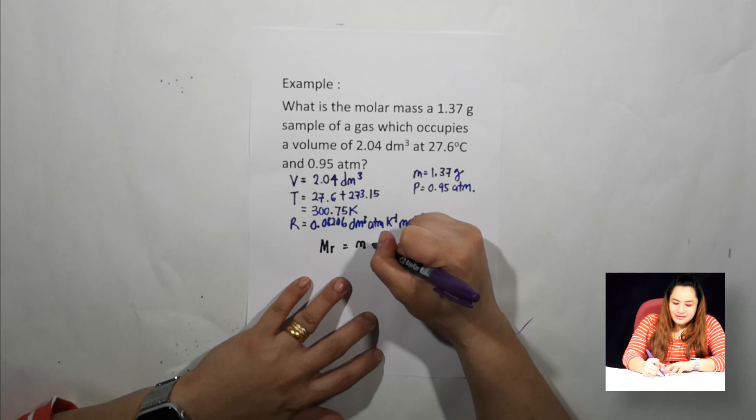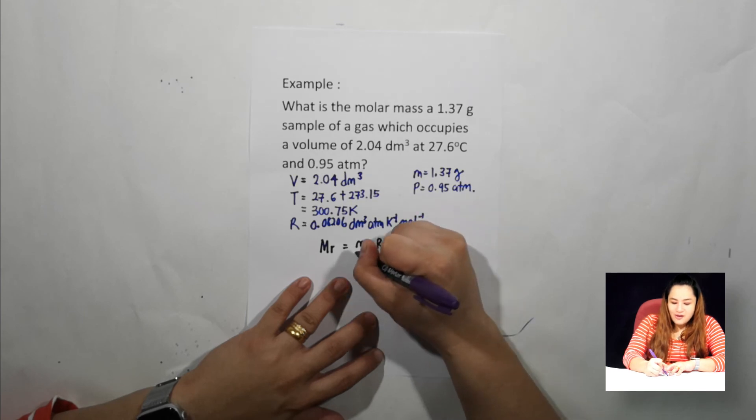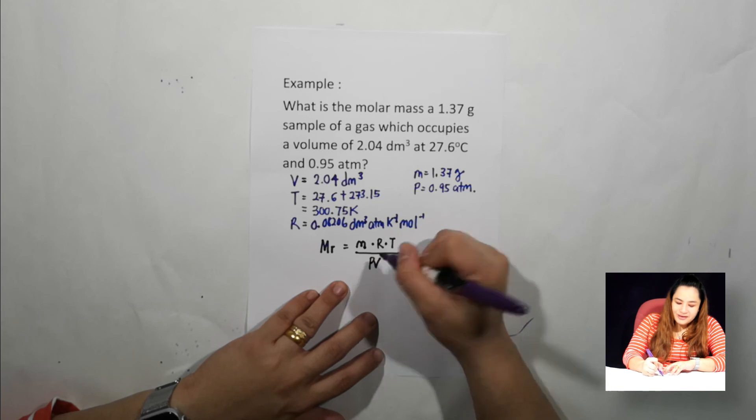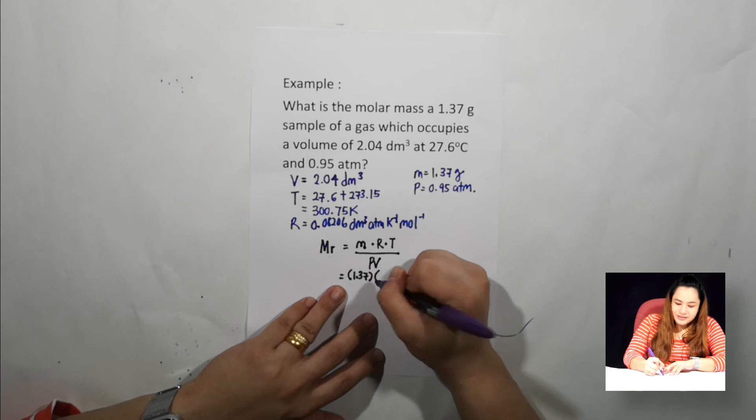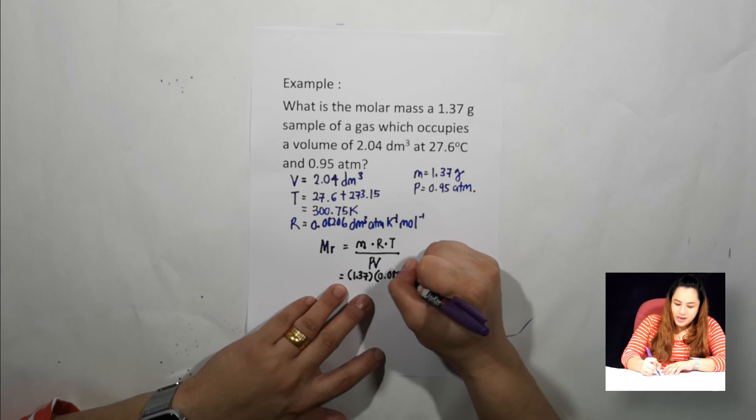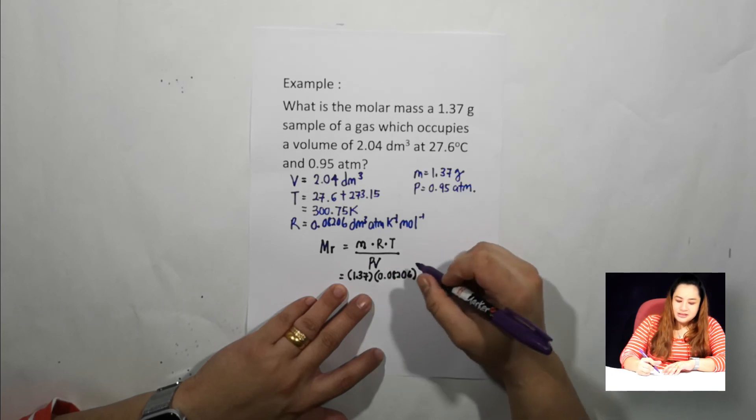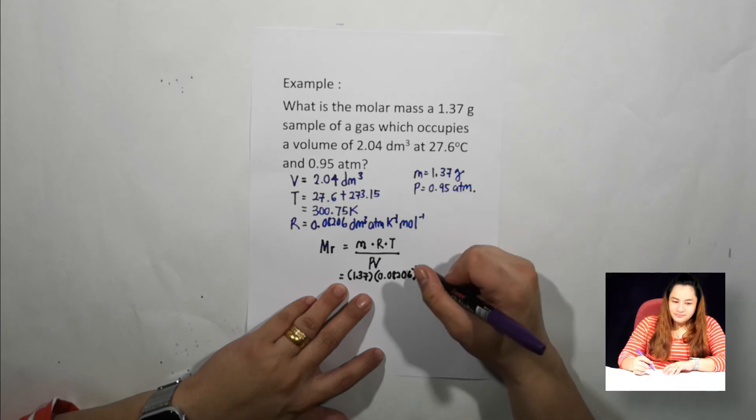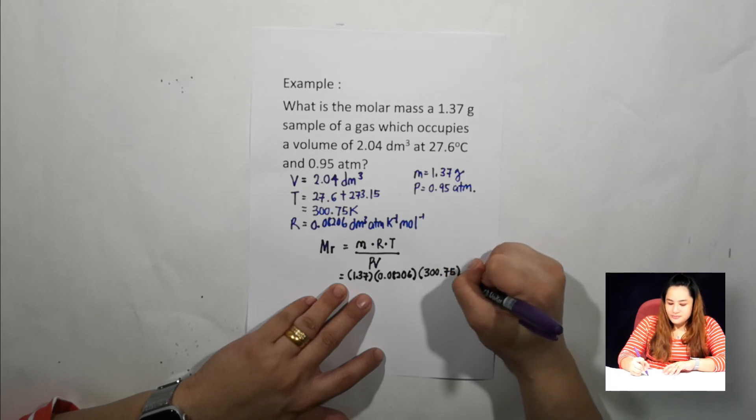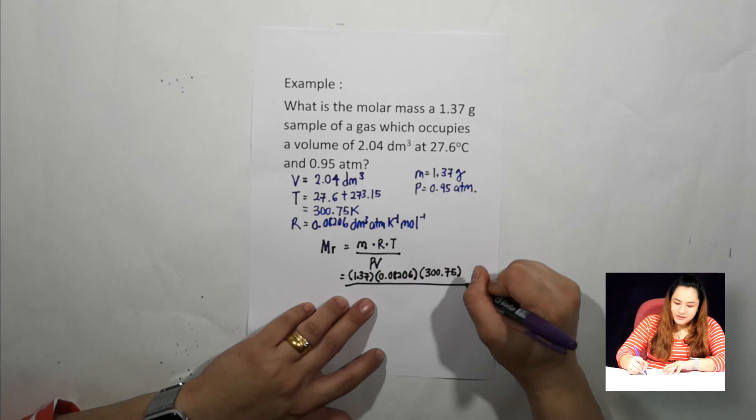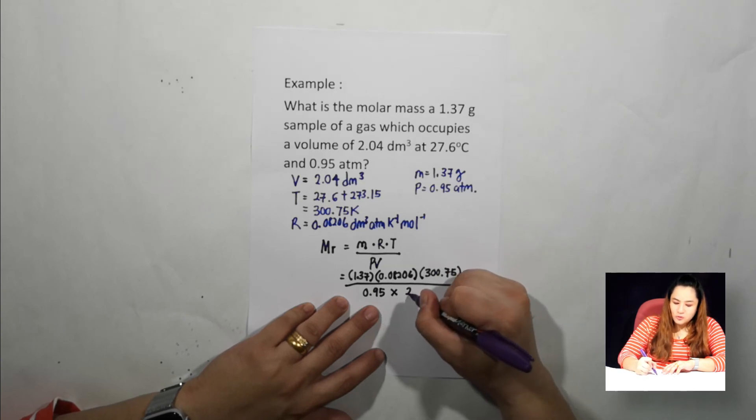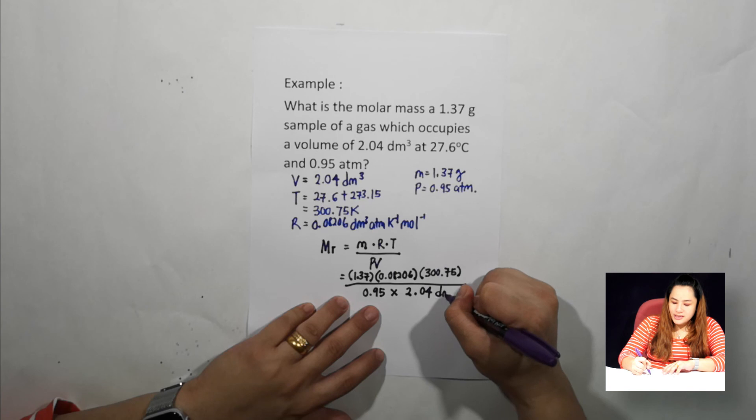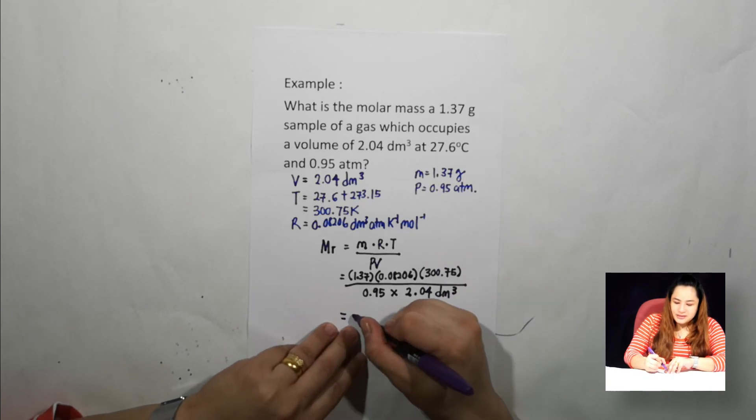So from what we've learned before, how to get the molar mass from ideal gas equation? So your molar mass is equal to mass times R times T over PV. So what is the mass given? 1.37. The gas constant is 0.08206, temperature is 300.75, over pressure given 0.95 times the volume given is 2.04 dm³. You'll get the answer is 17.45 grams per mole.